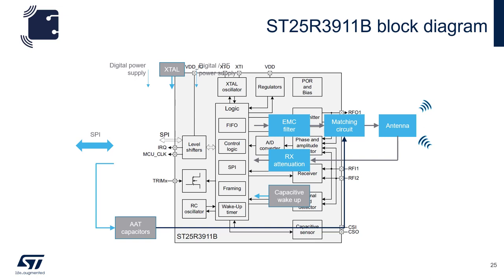Now let's take a look at the internal block diagram of the 3911B. We see that it's supplied from two voltages, VDD-IO and VDD. VDD-IO supplies the level shifters needed for the SPI interface. VDD supplies internal regulators, which provide voltages for the analog, the digital, and the RF portions of the device.